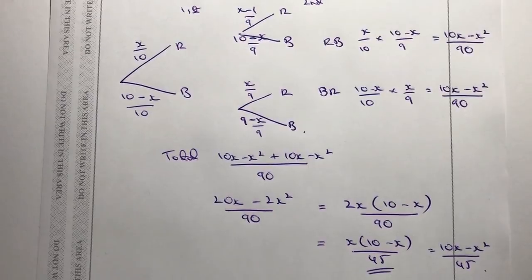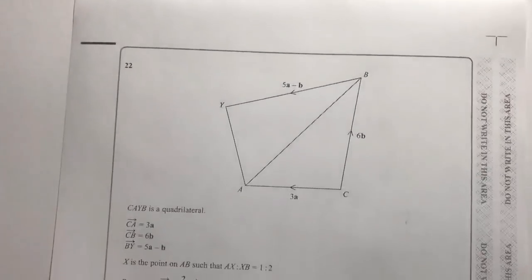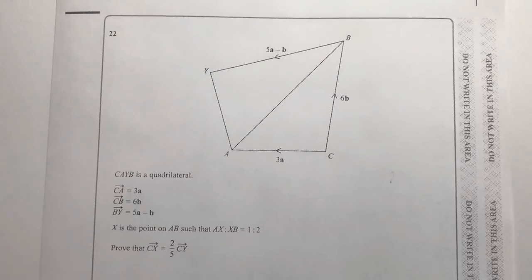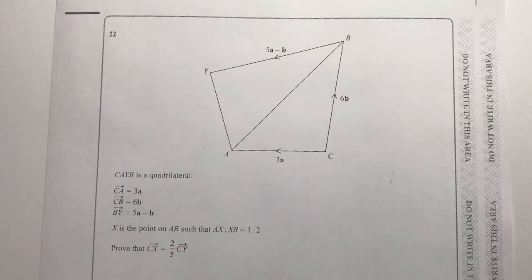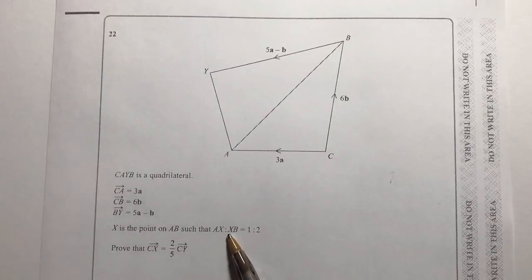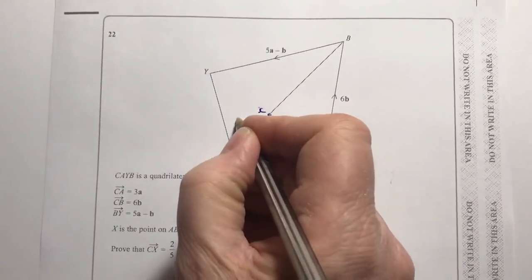That's why there are only three questions in this particular video — we're going to crack on with the next one, which is to do with vectors. Vectors are becoming very popular and do take a bit of time to work through. They're asking us to prove that vector CX equals two-fifths of vector CY, so we need to work out vector CX and vector CY first. Point X is on AB so that AX to XB equals 1 to 2.